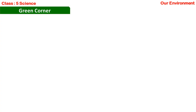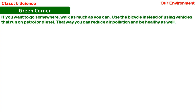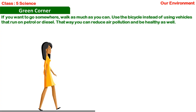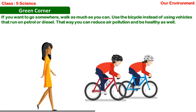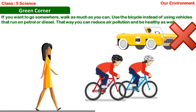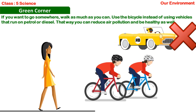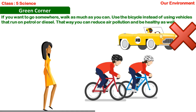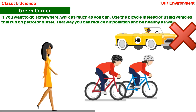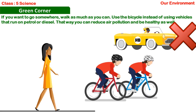Green corner: If you want to go somewhere, walk as much as you can. Use a bicycle instead of using vehicles that run on petrol or diesel. That way you can reduce air pollution and be healthy as well.